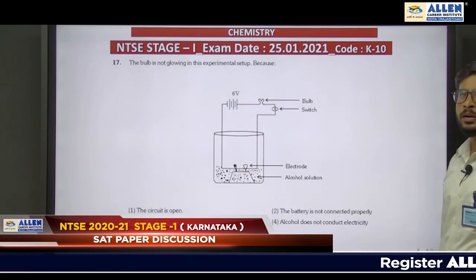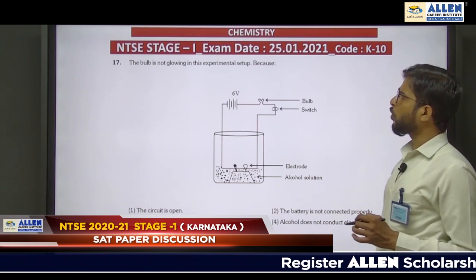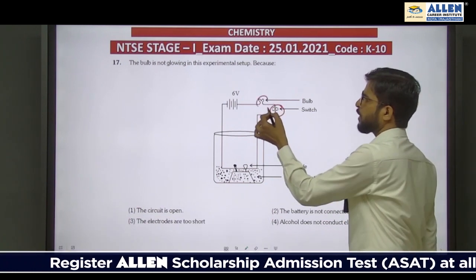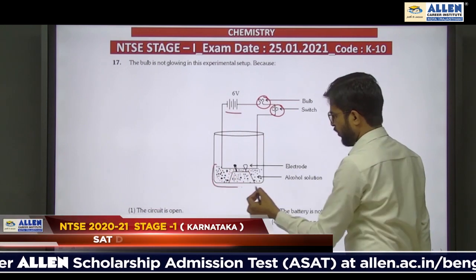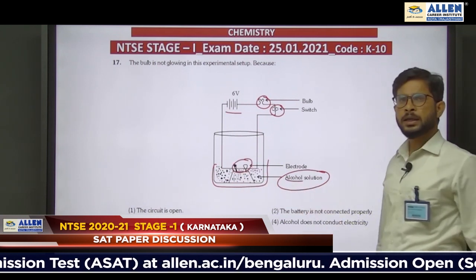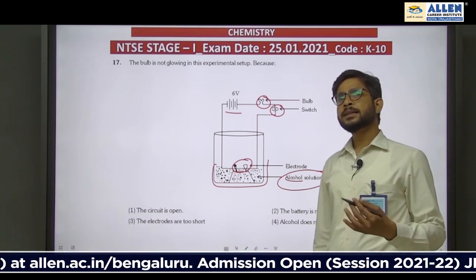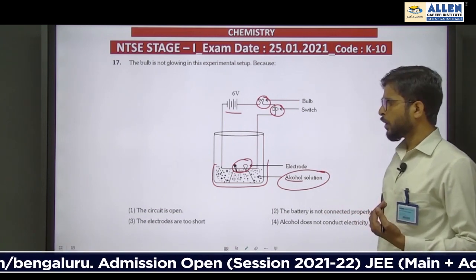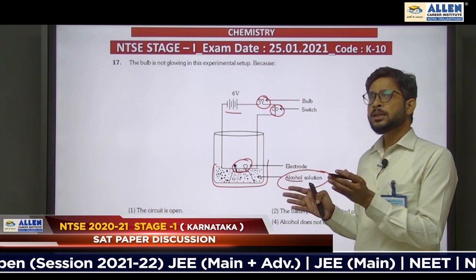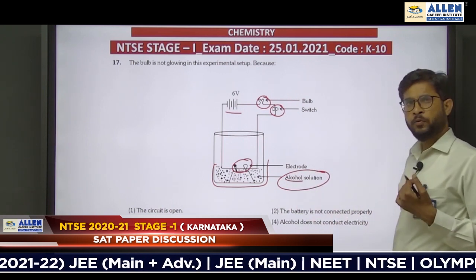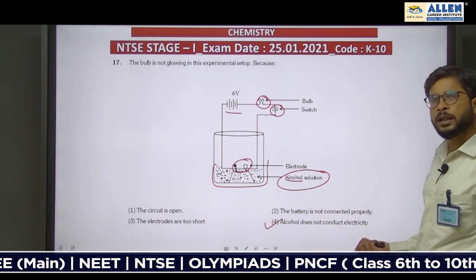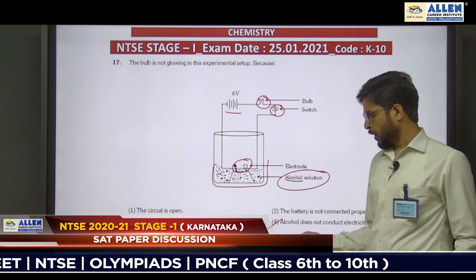Question 17: The bulb is not glowing in an experiment setup with a solution of alcohol and electrodes. Alcohol is an organic compound and does not ionize in solution. Due to the absence of ions, the alcohol solution does not conduct electricity. Option 4 is correct: alcohol does not conduct electricity because it doesn't ionize in solution.